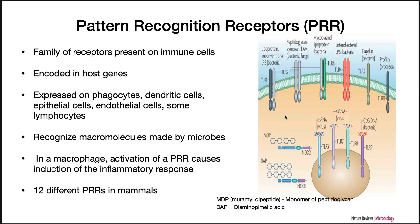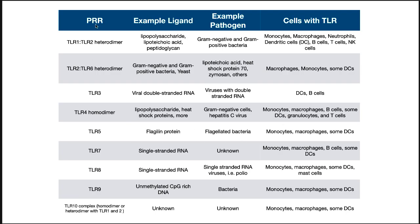As an example, PRRs like the TLR1 or TLR2 heterodimer recognize lipopolysaccharide, lipoteichoic acid, and peptidoglycan — which must be from a microorganism and could spell trouble for the body, so you want to detect and react to that. Another example is TLR8, a PRR that recognizes single-stranded RNA, as does TLR7, and these will cause a response upon recognition.